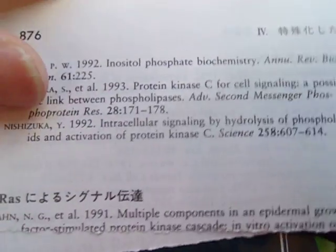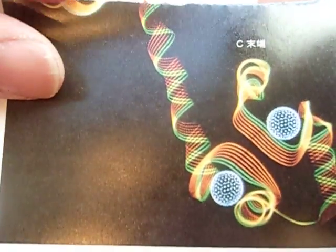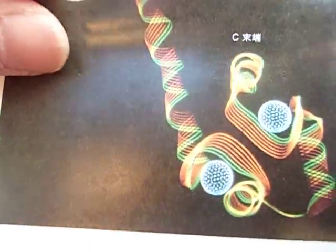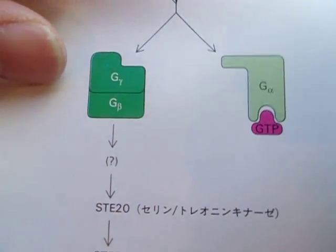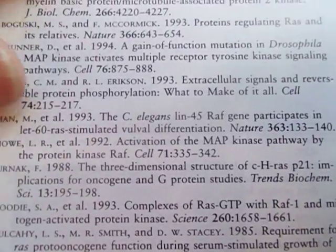Similarly, the Snyder group and the Weng group, both at Stanford, developed RegulomeDB. In a different way, this analyzes ENCODE data, Roadmap data, and some other data sources. You can put in genomic coordinates for a SNP or list of SNPs and click submit. You're presented with a score for the likelihood that the genomic region has regulatory potential, and then you can drill down to see the individual underlying data and understand why that assessment was made.